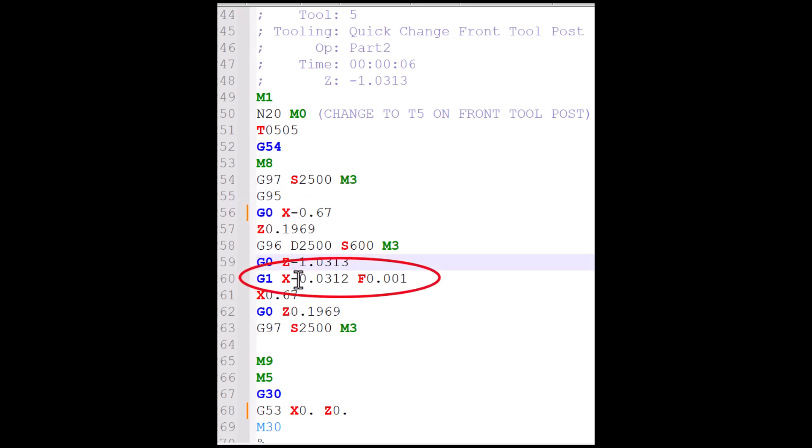Notice that the ending X position for the parting tool is a negative 0.0312 inch, which is just past the center position. So I changed this value to a positive 0.0312 inch value. Also notice that the retract speed for the parting tool is the same as a cutting speed at 1 inch per minute. I want to speed up the retraction speed, so I changed the retraction speed of the parting tool to 10 inches per minute. This will just speed up the total machining time.